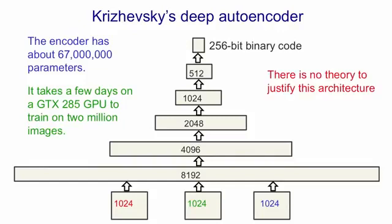There's absolutely no theory to justify the architecture he used. We know we want a fairly deep net, and it makes sense to make it get narrow as we go up. But this particular architecture, where you halve the number of units each layer, is just a guess. The interesting thing is, a guess like this already works quite well, and presumably there are other architectures that will work better.